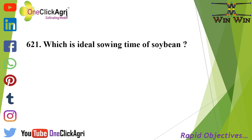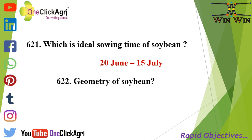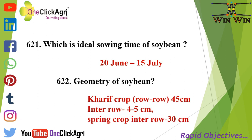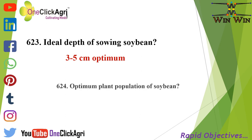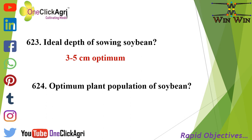The ideal sowing time of soybean is 20th June to 15th July. Geometry of soybean: it is a Kharif crop with row spacing of 45 cm and inter-row spacing of 4 to 5 cm for sprint crop, 30 cm inter-row spacing. Ideal depth of sowing is 3 to 5 cm. Optimum plant population is 0.45 million plants per hectare.